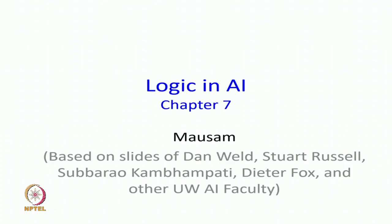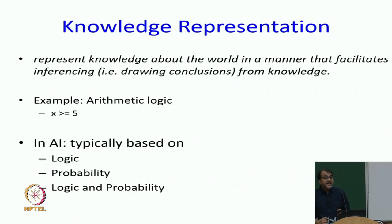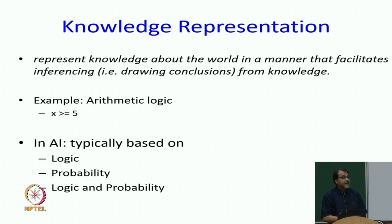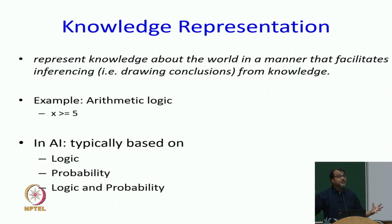We are in the world of representation right now. We have been trying to define representations that allow us to explain the problem to the problem-solving agent. There is another way we need to represent things, which is knowledge. Knowledge representation is one of the fundamental tenets of AI — represent knowledge about the world in a manner that facilitates inferencing. If I tell you x is greater than or equal to 5, you know it cannot be 4, cannot be 2, cannot be minus 3. By expressing an assertion about the world, I reduced my space of models.